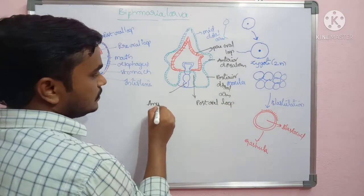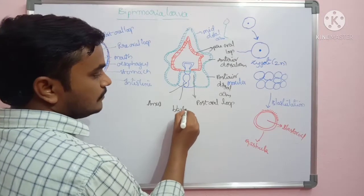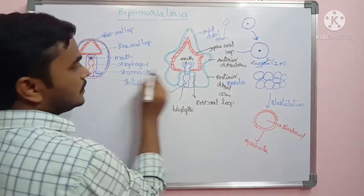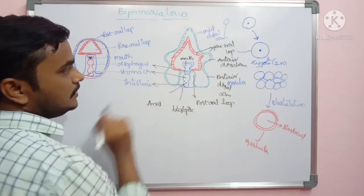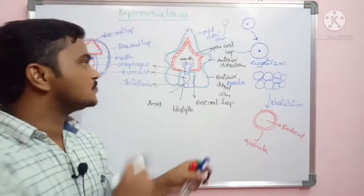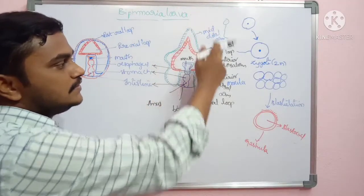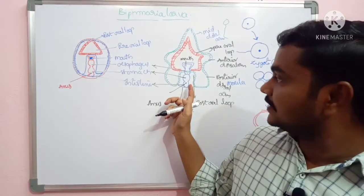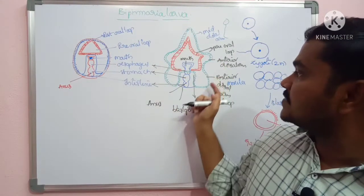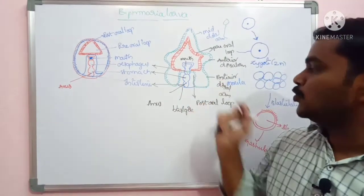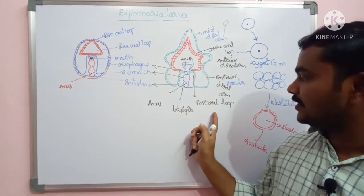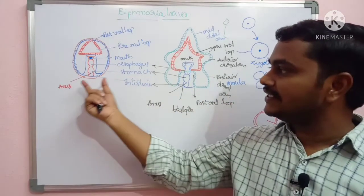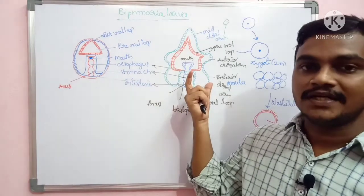Then this part is the anus. Then this region is the blastopore. Then this is the mouth. Then there is an arm — this is the esophagus part, the stomach, and the intestinal regions. In the second phase we are creating the same bilateral symmetry stages. Pre-oral, post-oral, and arms are saved. Anterior dorsal arm, posterior dorsal arm, pre-oral and post-oral regions.